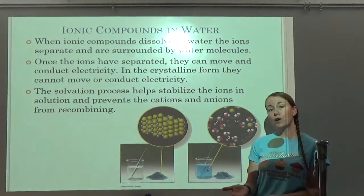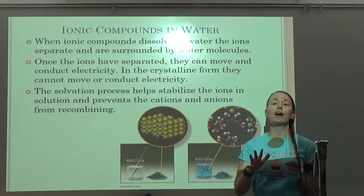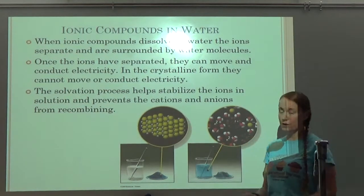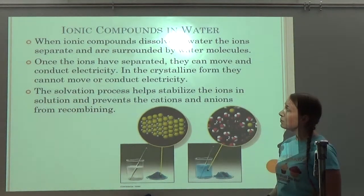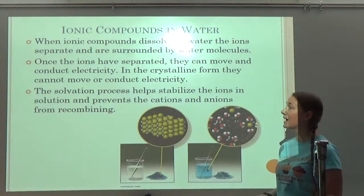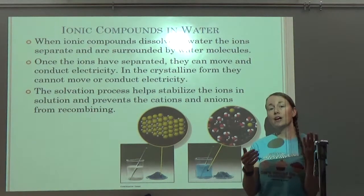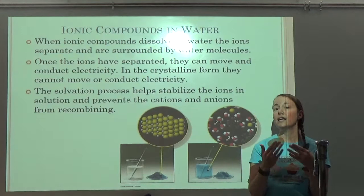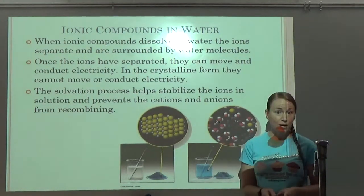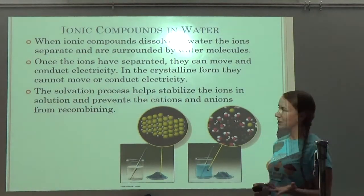Once you dissolve salt in water, because the sodium and chloride ions break apart and are free floating around in the water, you can conduct electricity. You just have to have charges that can move in order to conduct electricity. The solvation process helps stabilize the ions in solution and prevents the cations and anions from recombining. That's why the sodium and chloride ions don't reform in the water — the water molecules have surrounded them, blocking them from each other.